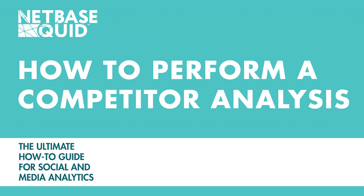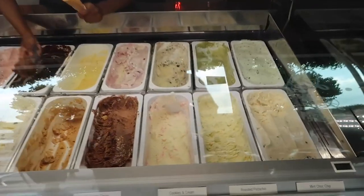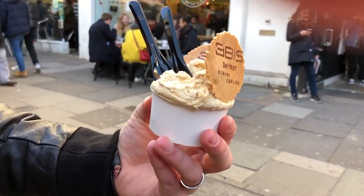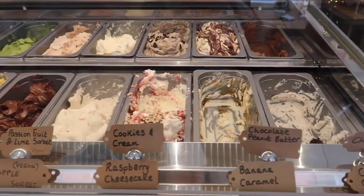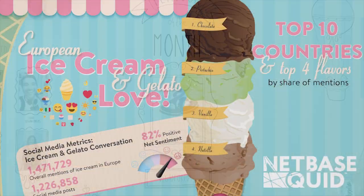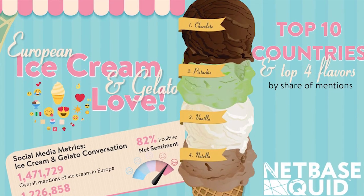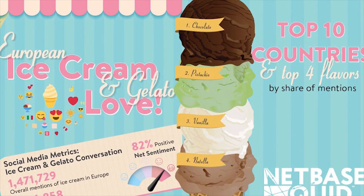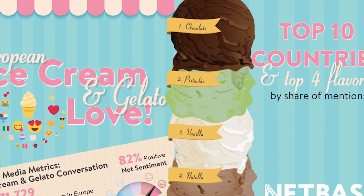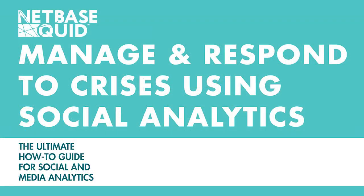Another section of this report looks at how to perform a competitor analysis. For instance, knowing which flavors of ice cream are favored in Europe — if ice cream or gelato is part of your game, this is critical intel. Our infographic indicates you should focus on chocolate, pistachio, vanilla, and Nutella, in that order.